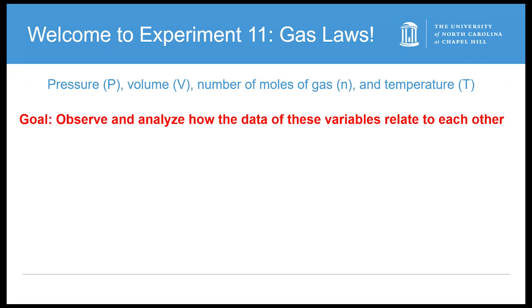The goal of this experiment is to see with data how these variables relate to each other. We are going to isolate two variables, meaning we are making these the ones that we will change and the one that we watch to see how it changes while keeping the others constant.